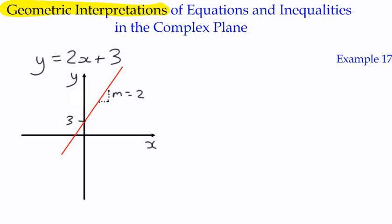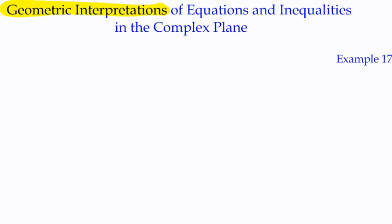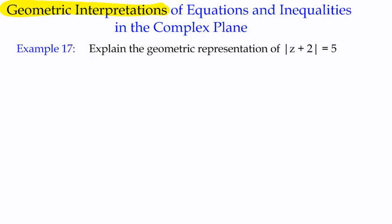The only difference here is that we're going to be looking at turning an equation into a picture in the complex plane. So instead of x and y, we're going to use real and imaginary parts. The example says: explain the geometric representation of the equation modulus of z plus 2 equals 5. It doesn't say solve the equation — it says explain the representation, or describe the locus of solutions.